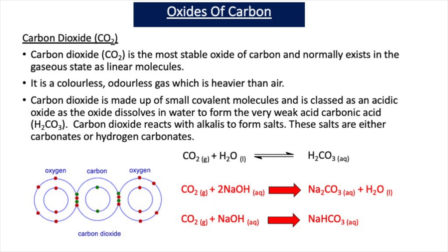In this video we're going to look at the oxides of carbon and lead. Starting with carbon, the most stable oxide is carbon dioxide. Carbon dioxide has formula CO2, normally exists in the gaseous state as linear molecules. It is colourless, odourless, and heavier than air. Carbon dioxide is made up of small covalent molecules and is classed as an acidic oxide, because when you put carbon dioxide in water it dissolves to form the very weak acid carbonic acid, which has formula H2CO3.